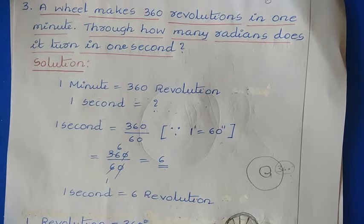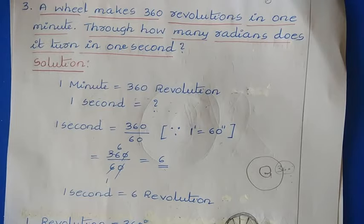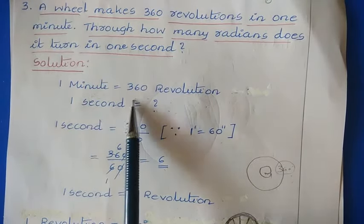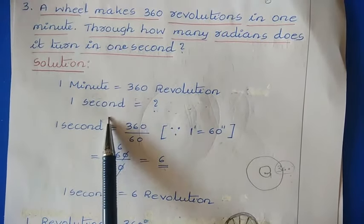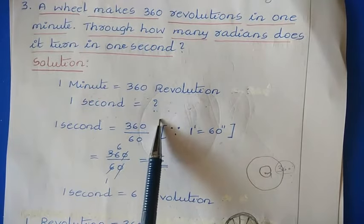Question number 3: a wheel makes 360 revolutions in 1 minute — through how many radians does it turn in 1 second? In the question, they have given that the wheel makes 360 revolutions in 1 minute. We need to find out how many radians it turns in 1 second.